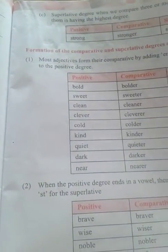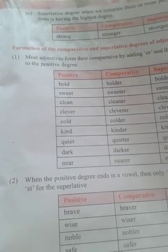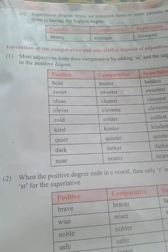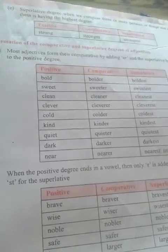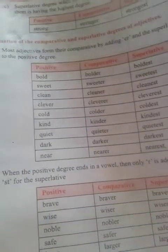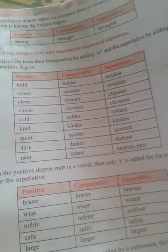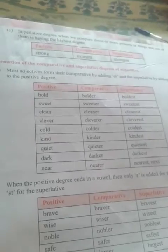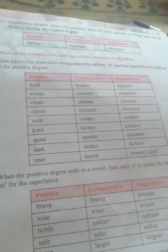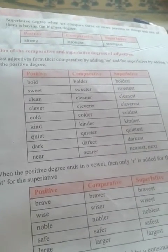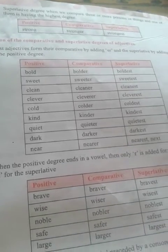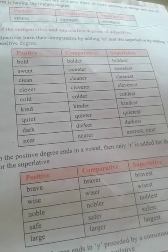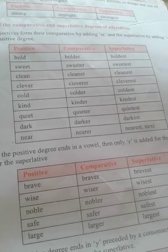Formation of the comparative and superlative degree of adjectives. Most adjectives form their comparative by adding -er and the superlative by adding -est to the positive degree. For example: bold, bolder, boldest; sweet, sweeter, sweetest; clean, cleaner, cleanest; clever, cleverer, cleverest.